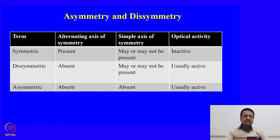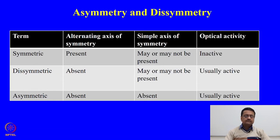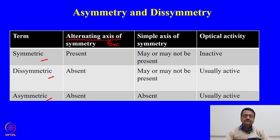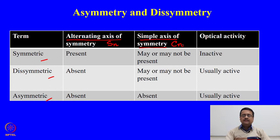To start the discussion today, I would like to draw your attention to this very simple table, which will be very useful in understanding asymmetry and disymmetry. We are trying to understand the difference between a symmetric molecule, a disymmetric molecule, and an asymmetric molecule. When we try to identify a molecule as symmetric, disymmetric, or asymmetric, we look for the presence of an alternating axis of symmetry, that is, some kind of Sn. If Sn is present in a molecule, we then look for whether the molecule has any simple axis of symmetry, Cn. If these are present, the symmetric molecule will be optically inactive — it will not rotate the plane of plane-polarized light.